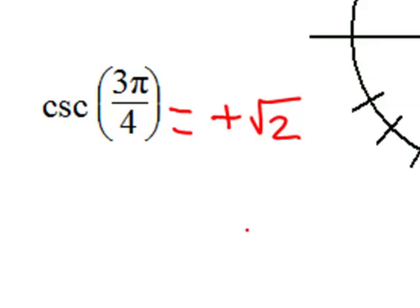And the value at pi over four for cosecant is simply square root of two. Real quick reminder, we're not using degrees right now. We're using radian measures and that denominator four indicates that it's going to be related to pi over four.